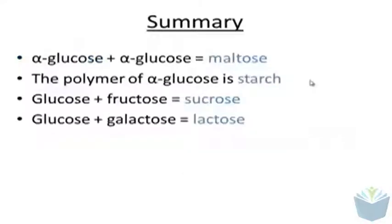In summary, two alpha glucose joined together form the disaccharide maltose. The polymer of alpha glucose is starch which we'll come on and look at in the next video. Alpha glucose and fructose, both monosaccharides, form the disaccharide sucrose. Glucose and galactose, again both monosaccharides, go together to form the disaccharide lactose. Maltose, sucrose, lactose, and starch all contain glycosidic bonds. If you ever see the word glyco, it's very similar to glycogen which is the storage molecule for alpha glucose in animals.